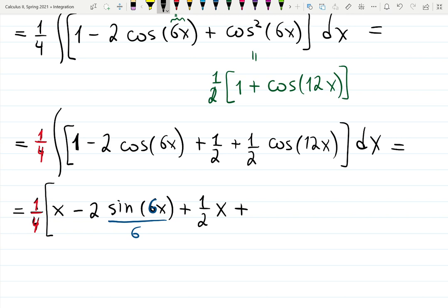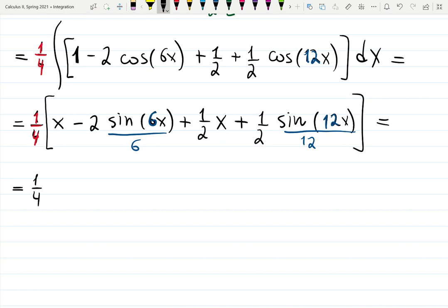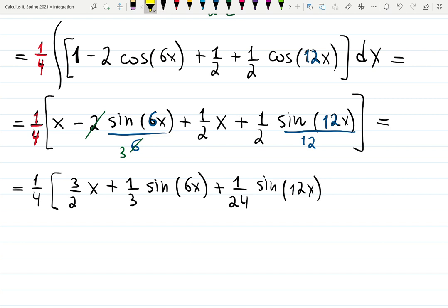Now the last cosine also requires u substitution. It's going to be one half, integral of cosine is sine 12x, divide by the leading coefficient, in this case it's 12. Simplify. So it's going to be one quarter outside, x plus one half x that's three halves x, then 2 divided by 6 gives me one third. One half over 12 is 1 over 24. Those signs cannot be collected together because they have different angles, so it's plus one third sin(6x) plus 1 over 24 sin(12x). Be careful with this, plus C. That's my indefinite integral.